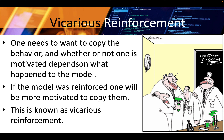In psychology, concepts can be divided into two categories: natural and artificial. Natural concepts are created naturally through your experiences and can be developed from either direct or indirect experiences. An artificial concept, on the other hand, is a concept that is defined by a specific set of characteristics. Various properties of geometric shapes like squares and triangles serve as useful examples of artificial concepts. A triangle always has three angles and three sides; a square always has four equal sides and four right angles.